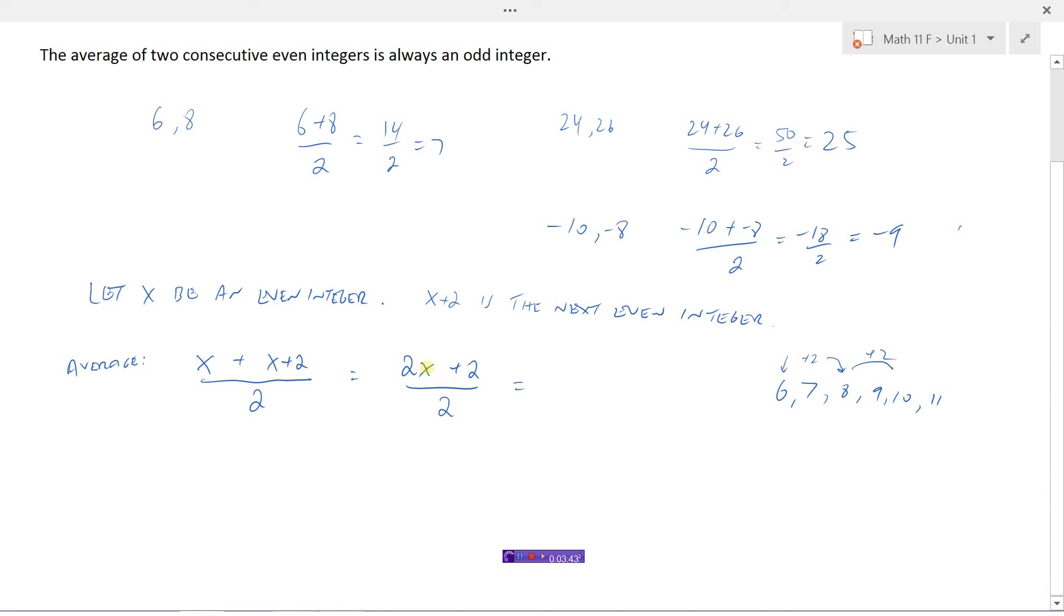And hey, I can divide these both by 2. So 2x divided by 2 would just be x, plus 2 divided by 2 would be 1. So I've just found the average to be x plus 1. Well, if x was an even integer to start with, then when I add 1 to an even integer, that must be an odd integer.